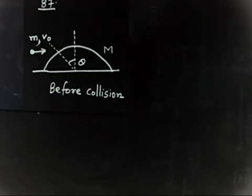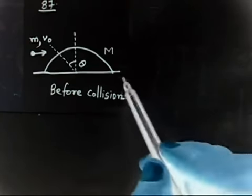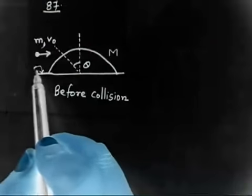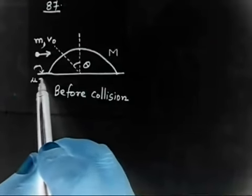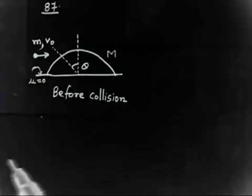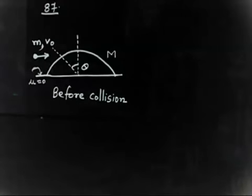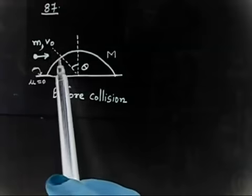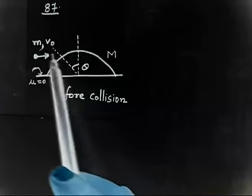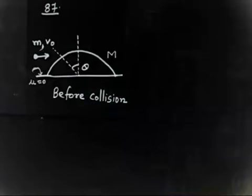Let us discuss this interesting problem. We have a hemisphere kept on a smooth floor where mu equals zero. The mass of this hemisphere is capital M, and a small mass m is moving towards the hemisphere and collides with it at a point that makes an angle theta with the radius vector and the perpendicular.